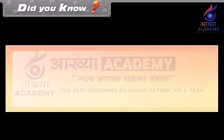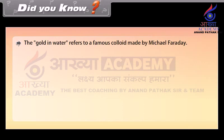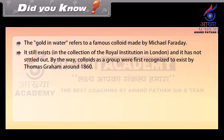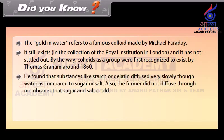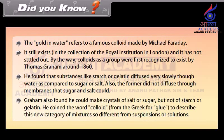Did You Know? The 'gold in water' refers to a famous colloid made by Michael Faraday. It still exists in the collection of the Royal Institution in London and has not settled out. Colloids as a group were first recognized to exist by Thomas Graham around 1860. He found that substances like starch or gelatin diffused very slowly in water compared to sugar or salt, and did not diffuse through membranes that sugar and salt could. Graham coined the word 'colloid' from the Greek for 'glue' to describe this new category of mixtures, so different from suspensions or solutions.